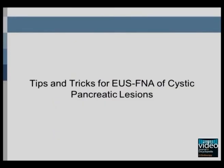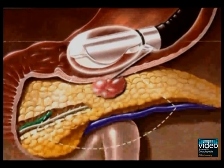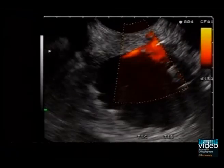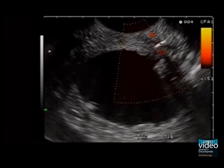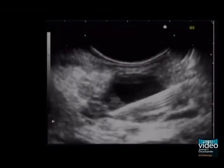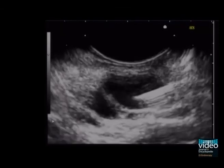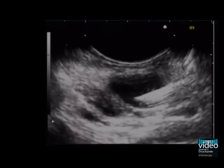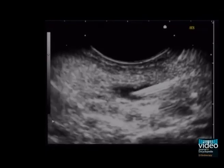Here are some tips and tricks for EUS FNA of cystic pancreatic lesions. The movement of the needle is easier when the echo endoscope is straight, so always try to maintain it as straight as possible. Scan the needle pathway using colour Doppler mode to identify and avoid vascular structures. Always keep the needle in the visual plane during EUS FNA. Aspirate all fluid, make one needle pass, and use antibiotics in order to minimise the risk of cyst infection.